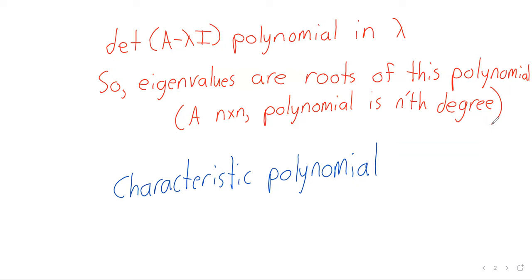Outside of classrooms, that's a deeply flawed process because, in general, we can't find determinants quickly. There are also other issues related to numerical stability. But for the little 2 by 2 and even 3 by 3 matrices we work with in the textbook, this is a valid way of finding eigenvalues.